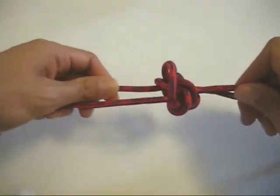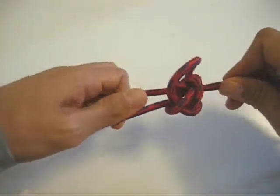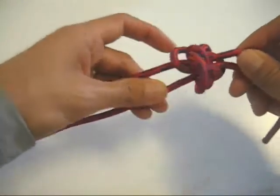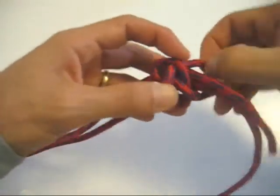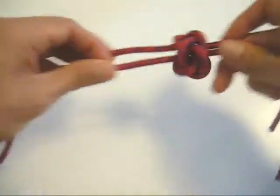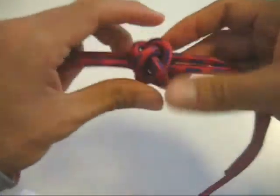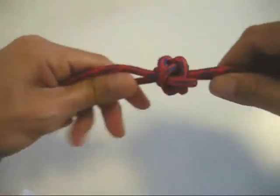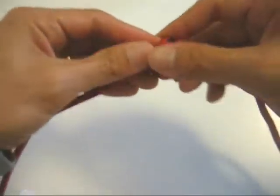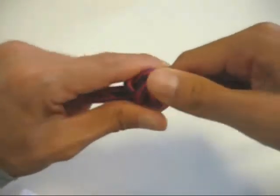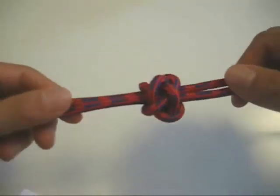And then you just want to slowly, gently cinch this knot tighter. And you might need to work through all the loose parts of the knot. And gradually you just tug on it and pull on the loose bits. And there you have it, this is the lanyard knot.